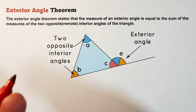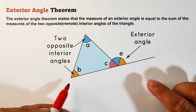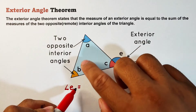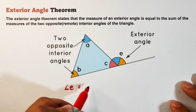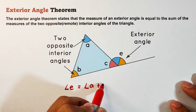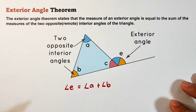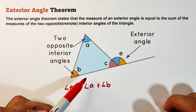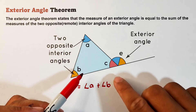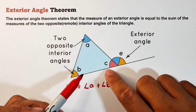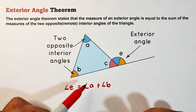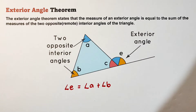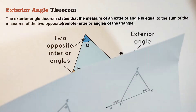To find the measurement of an exterior angle, the equation is: angle E equals angle A plus angle B — the sum of the two remote interior angles. How do we know which angles are the remote interior angles? These are the two angles that are not adjacent or supplementary to the exterior angle. As you can see, angle C is not included among the remote interior angles.